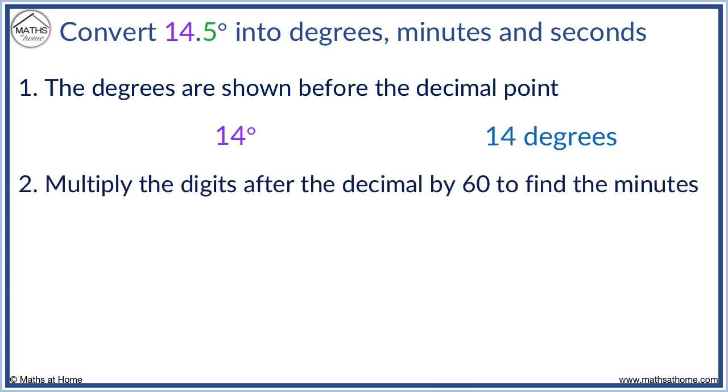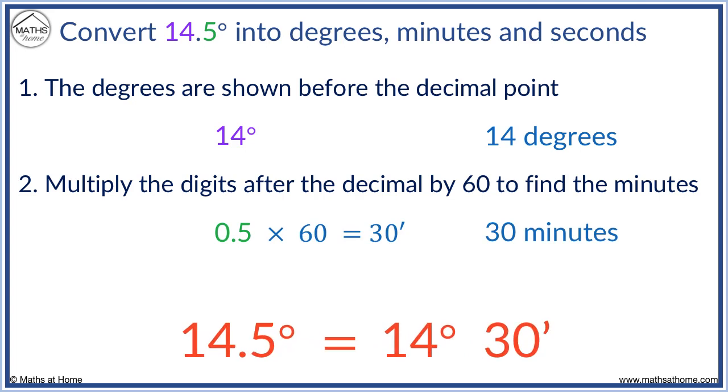Step 2. Multiply the digits after the decimal point by 60 to find the number of minutes. After the point, we have 0.5. 0.5 times 60 equals 30. We have 30 minutes. So 14.5 degrees equals 14 degrees and 30 minutes.